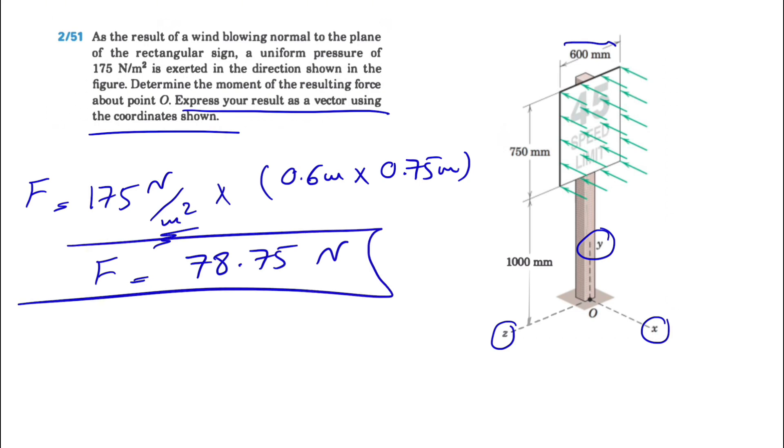Now the question is where is this force applying? The answer is that because of the symmetry of this sign, the single force will be applying exactly at the center of the sign. We know the magnitude is 78.75 Newtons, and the distance from the top is 750 divided by 2, or 375 millimeters.